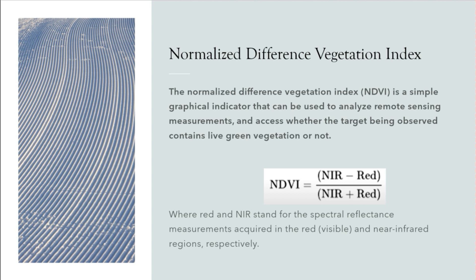The NDVI is a simple graphical indicator that can be used to analyze remote sensing measurements and assess whether the target being observed contains live green vegetation or not — in other words, whether it contains a good amount of chlorophyll content. The NDVI is equal to NIR minus red divided by NIR plus red, where red and near-infrared stand for the spectral reflectance measurements acquired in the visible red and near-infrared regions of the spectrum respectively.